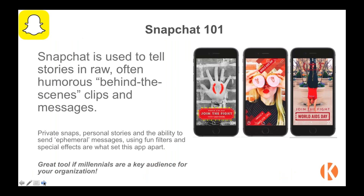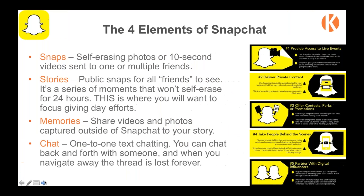Snapchat 101: it's really just a quick way to tell a story. It gives you behind-the-scenes clips and messages — the big thing is that messages don't last forever. There are four key elements: Snaps are self-erasing photos you can send to one or multiple friends; Stories let you record multiple moments during the day and they stay for 24 hours — this is really where you'll want to focus your efforts during your giving event.